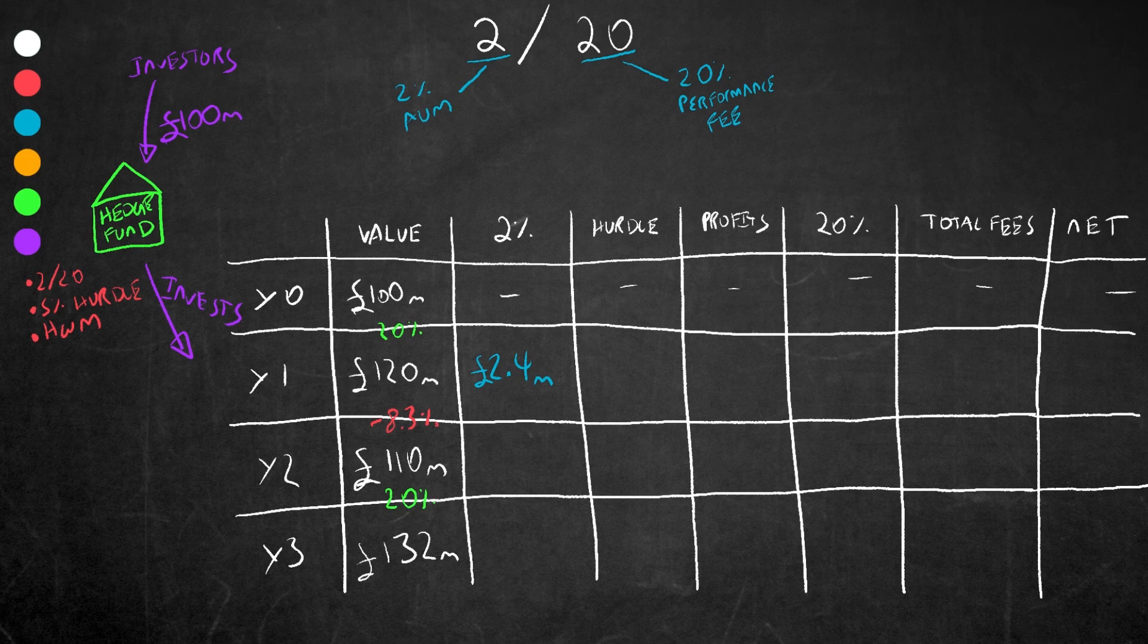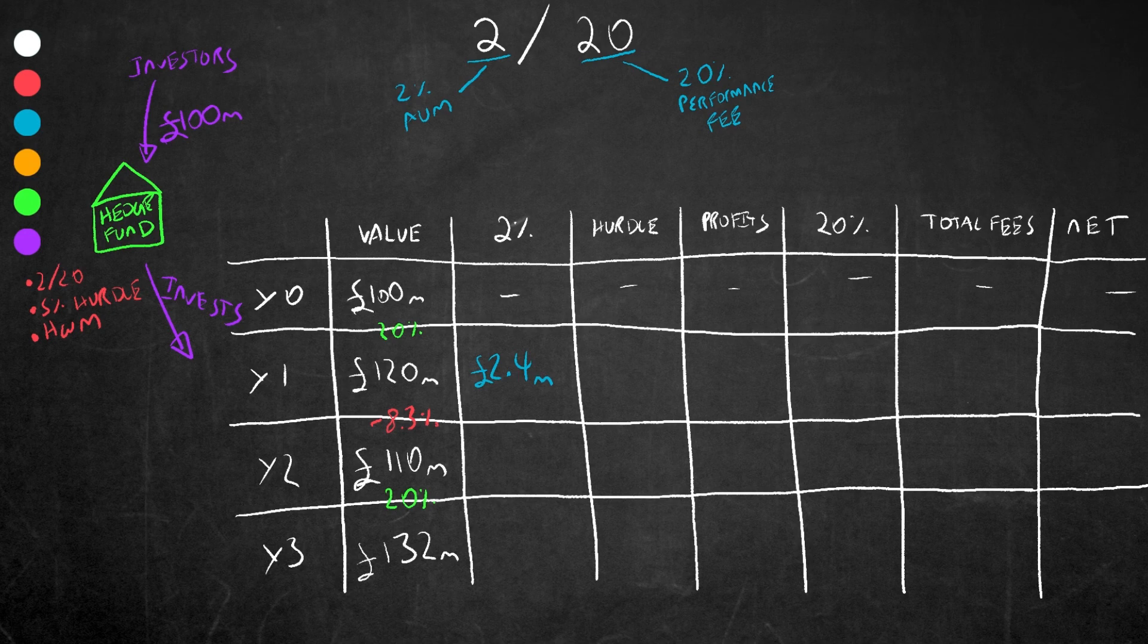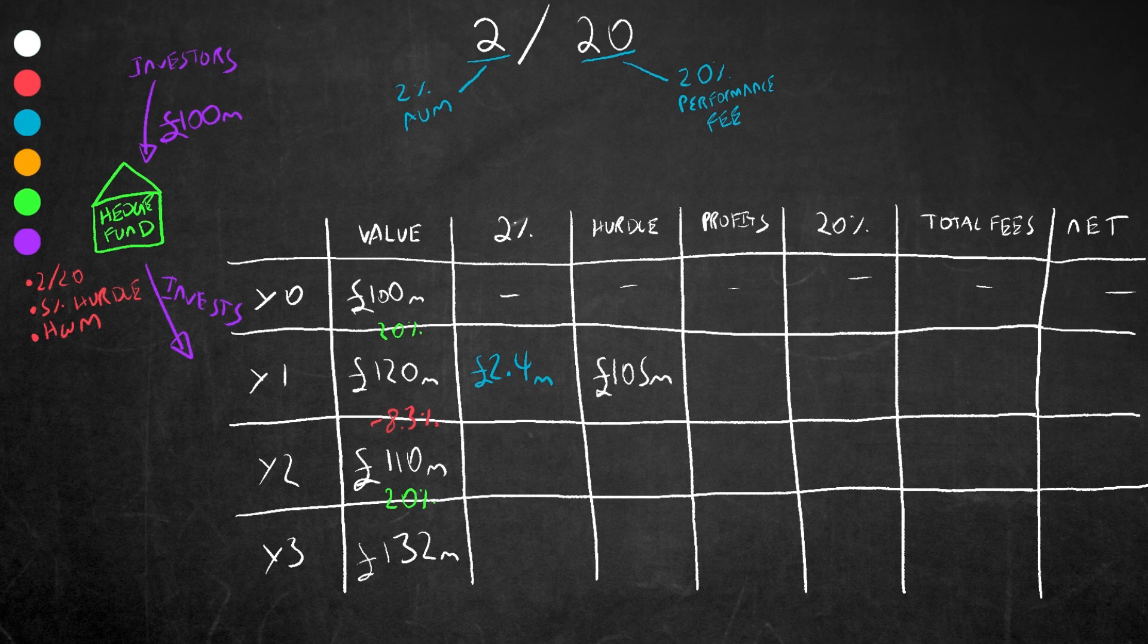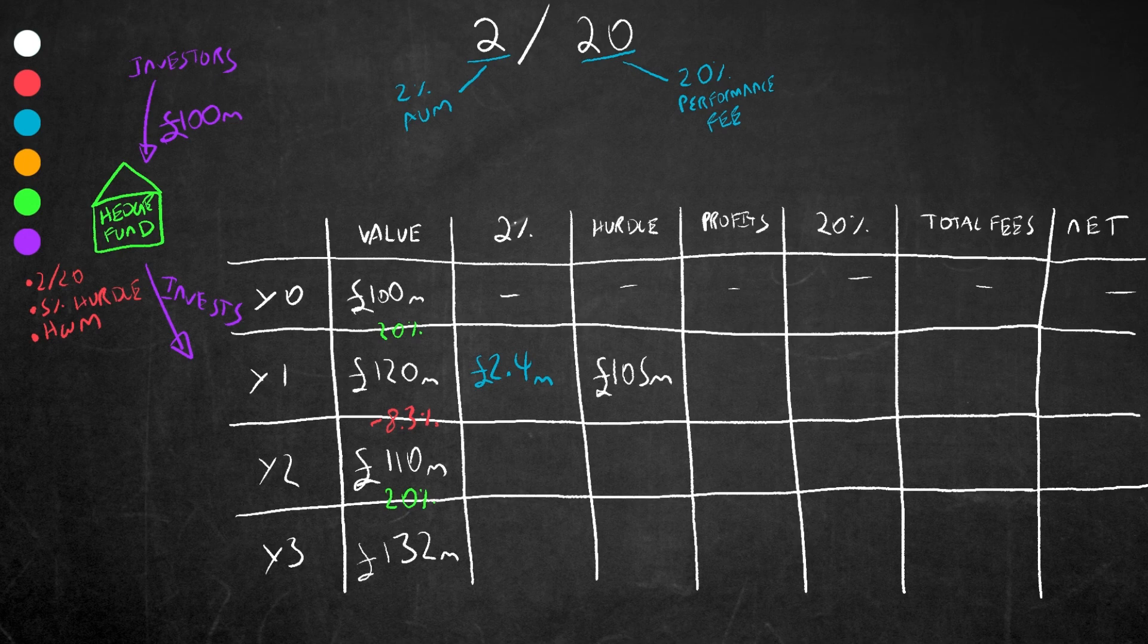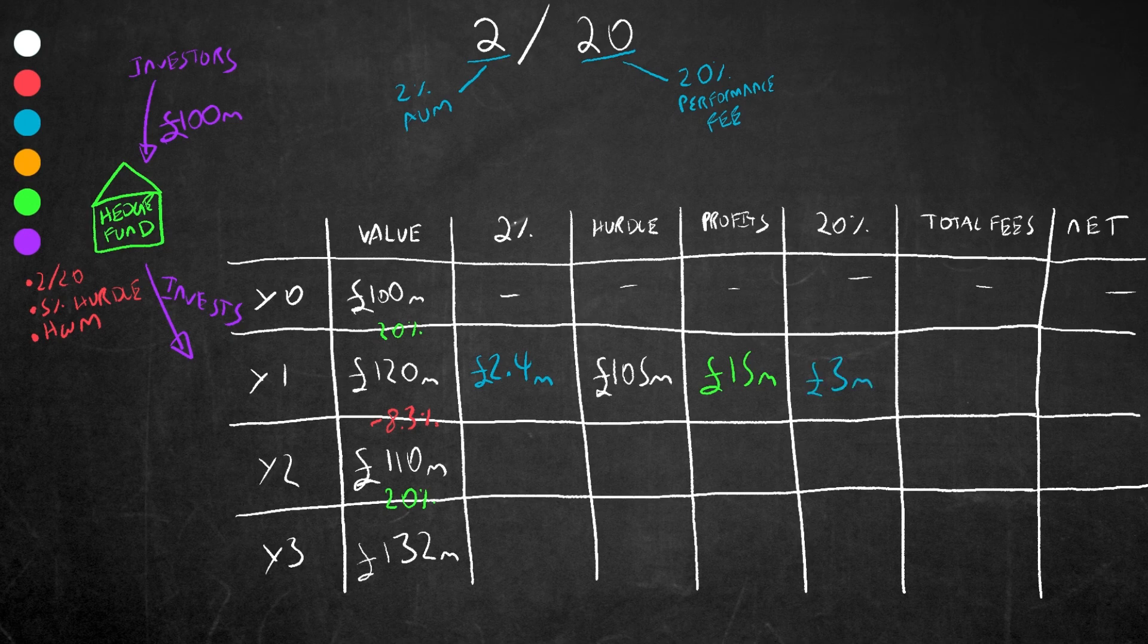The 20 represents the 20 percent performance fee charged on any profits generated. However, there was a hurdle rate of 5 percent involved. This means that 20 percent is only charged on profits above the 5 percent hurdle rate. The hurdle that needs to be achieved before any performance fees are deducted is 105 million. As the value of the fund is now 120 million, it is 15 million above the hurdle rate, so the fees would be 20 percent of 15 million, which is 3 million.